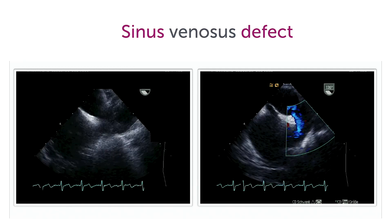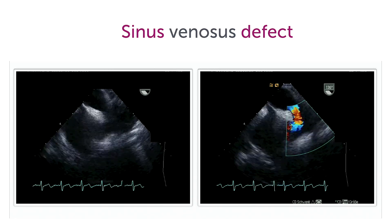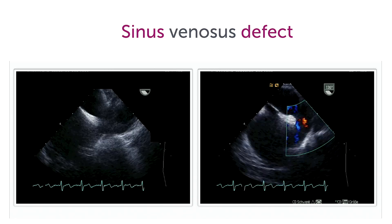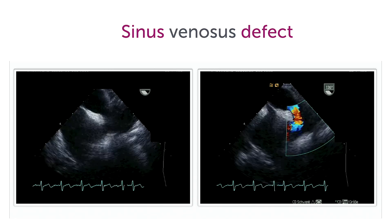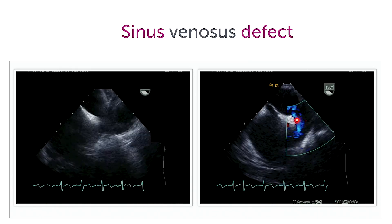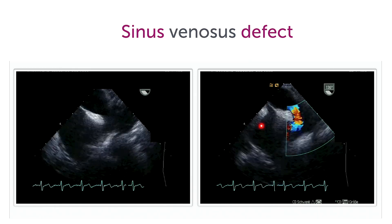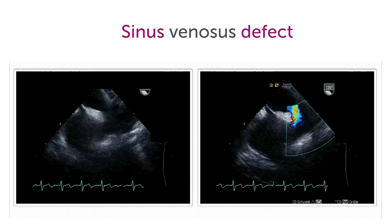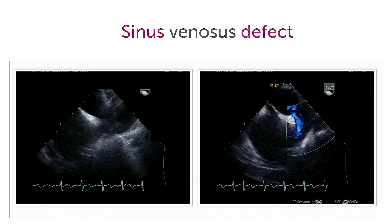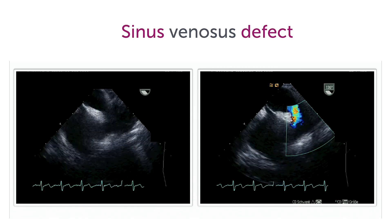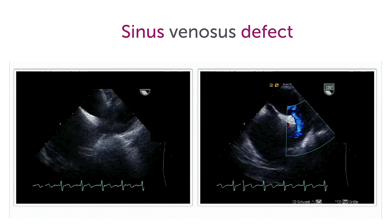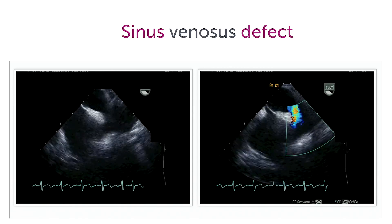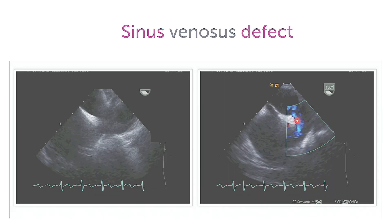These defects are very commonly associated also with an abnormal pulmonary venous drainage, where the blood of the pulmonary vein drains directly into the superior vena cava, or into the junction where the superior vena cava enters.